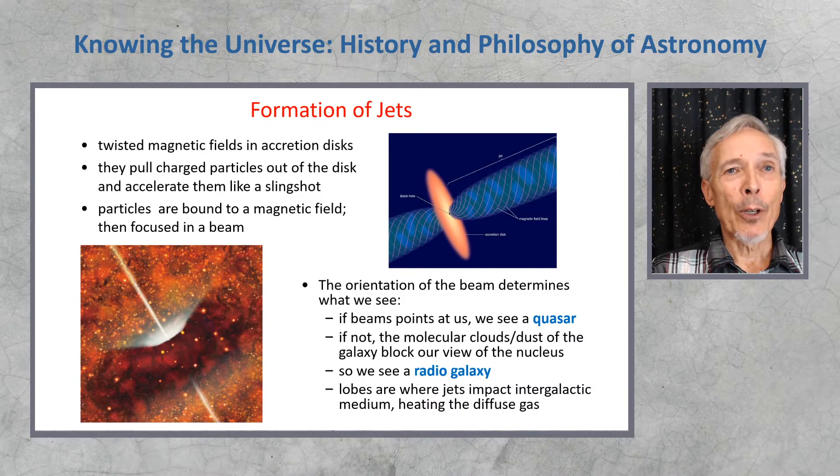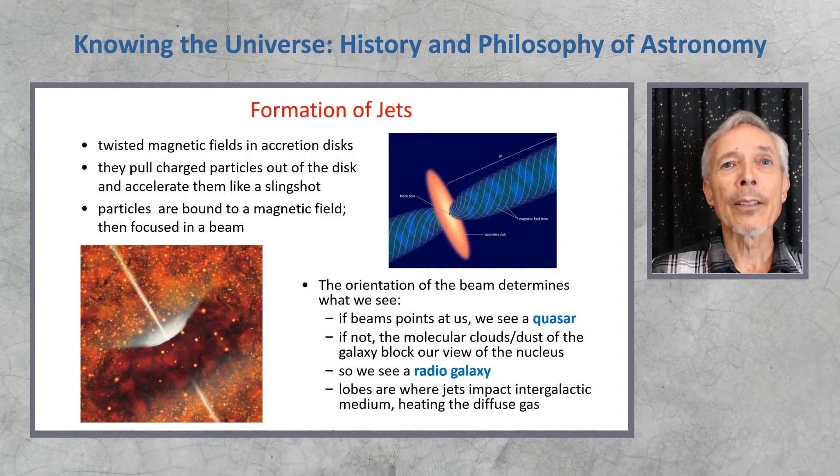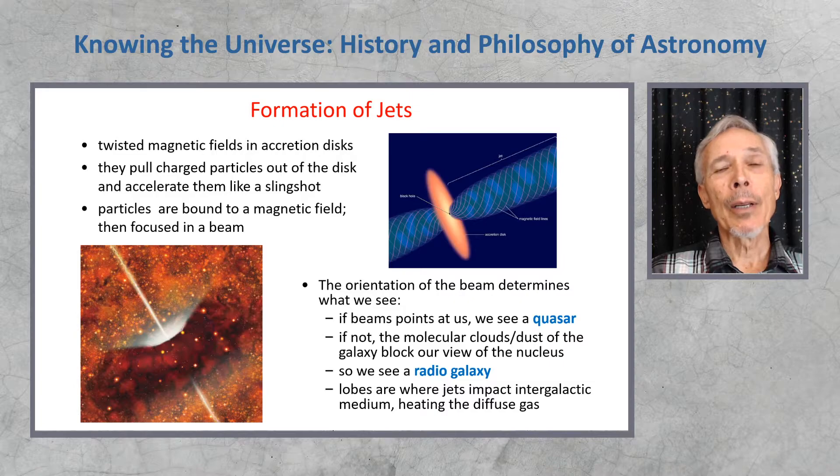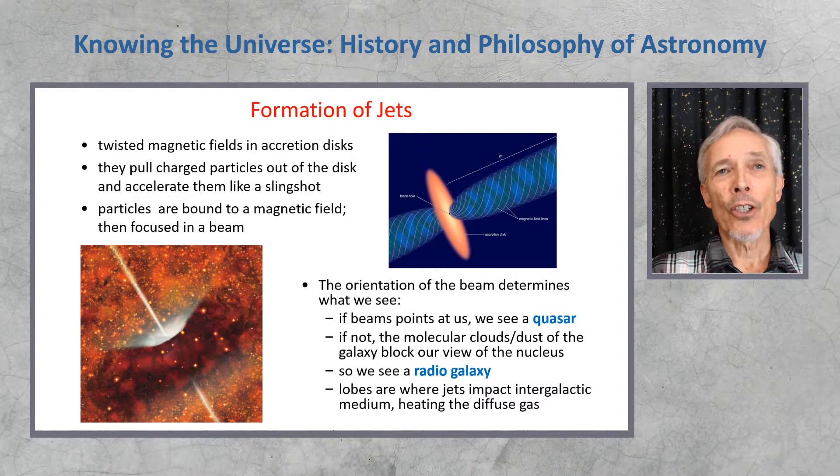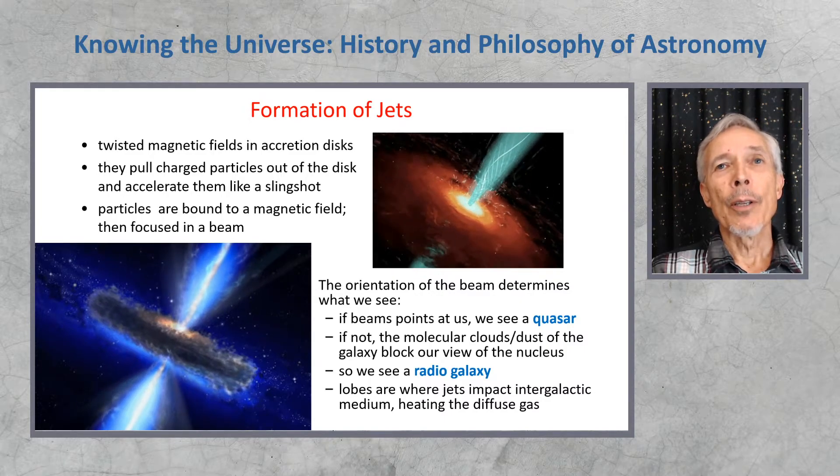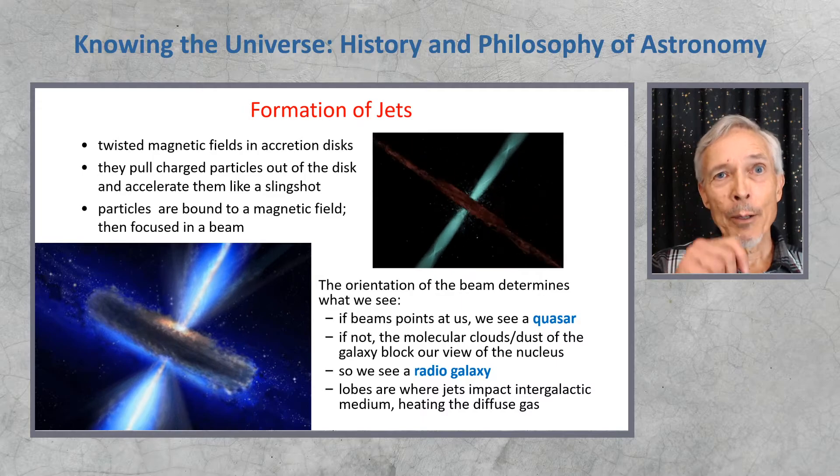If it's transverse to the line of sight, like the image on the lower left, then we see a radio galaxy, where the jets beam plasma far out beyond the visible sides of the galaxy. The lobes are where the jets impact the intergalactic medium, heating diffused gas in a shock front. Here are two simulations of how the jet might look and its entrained magnetic field.